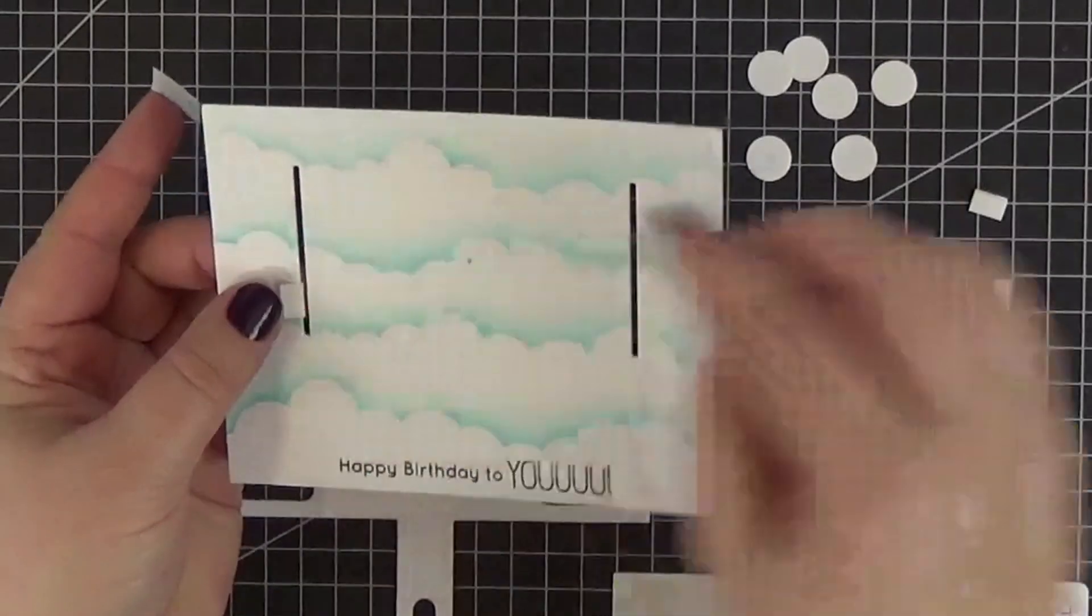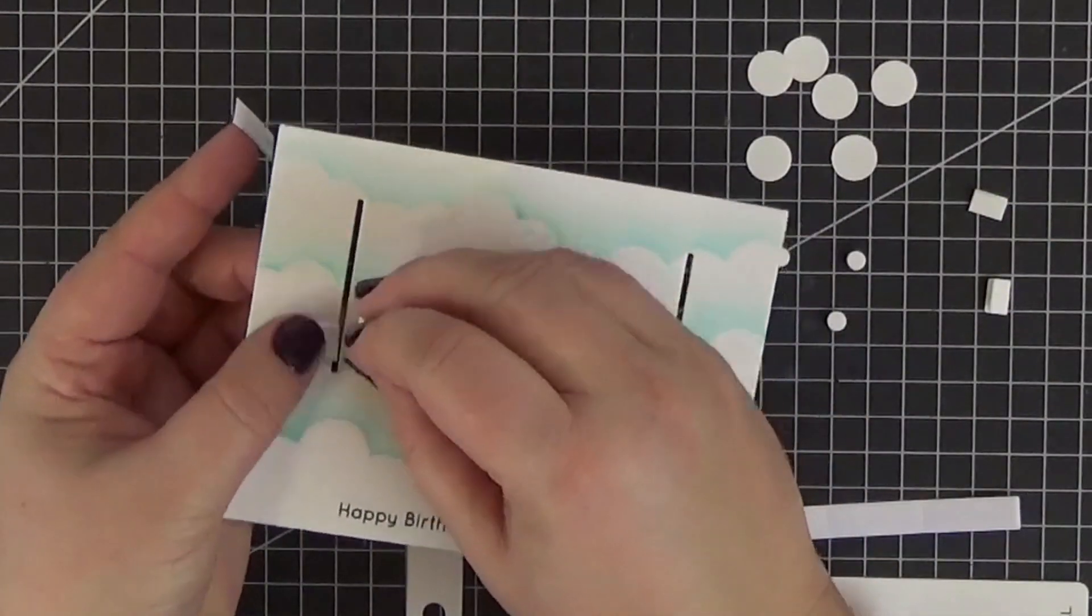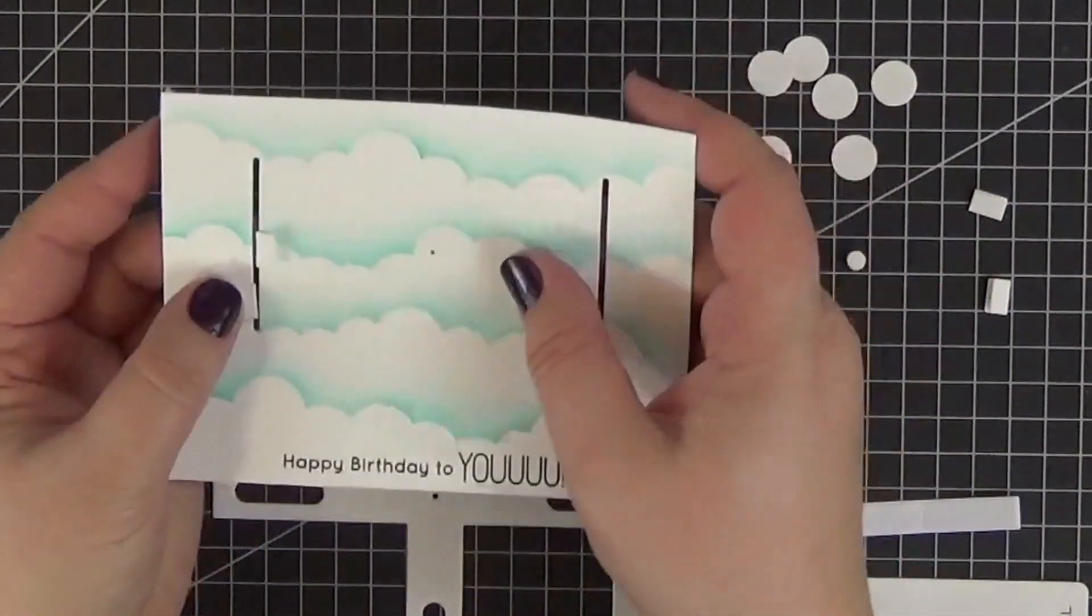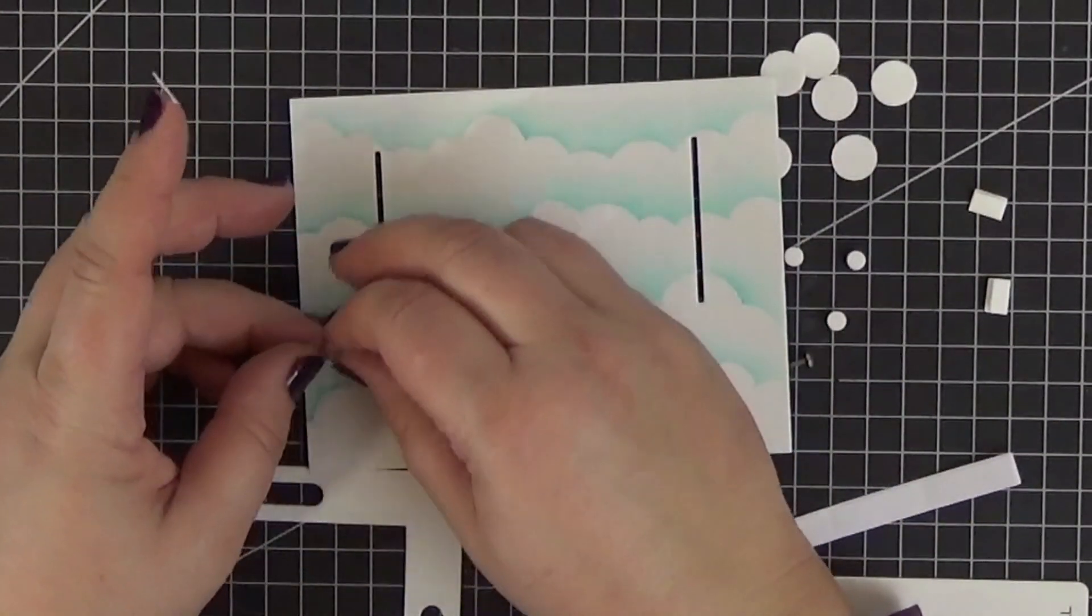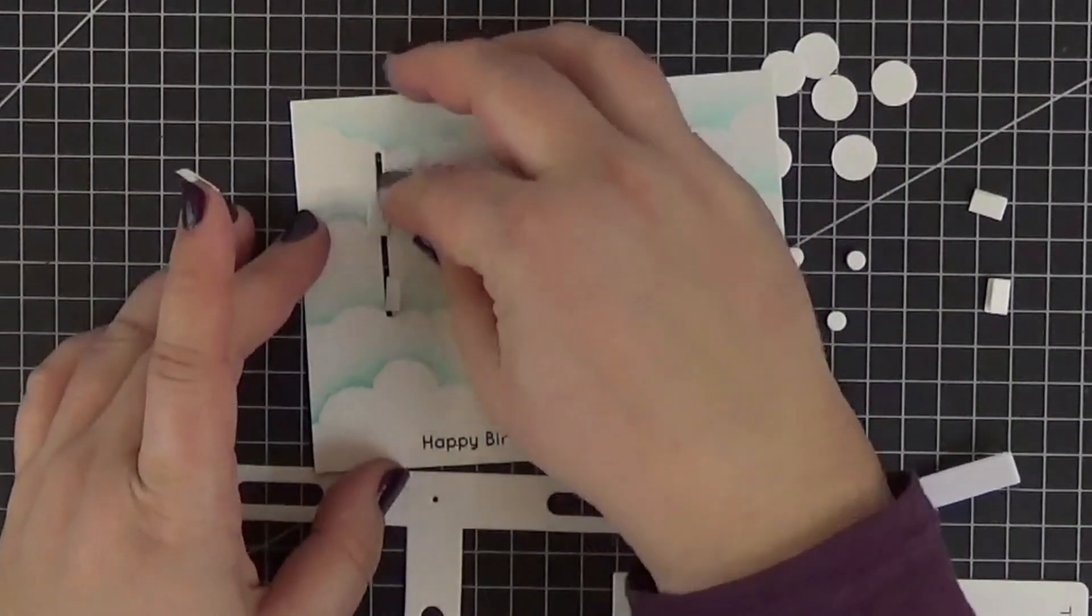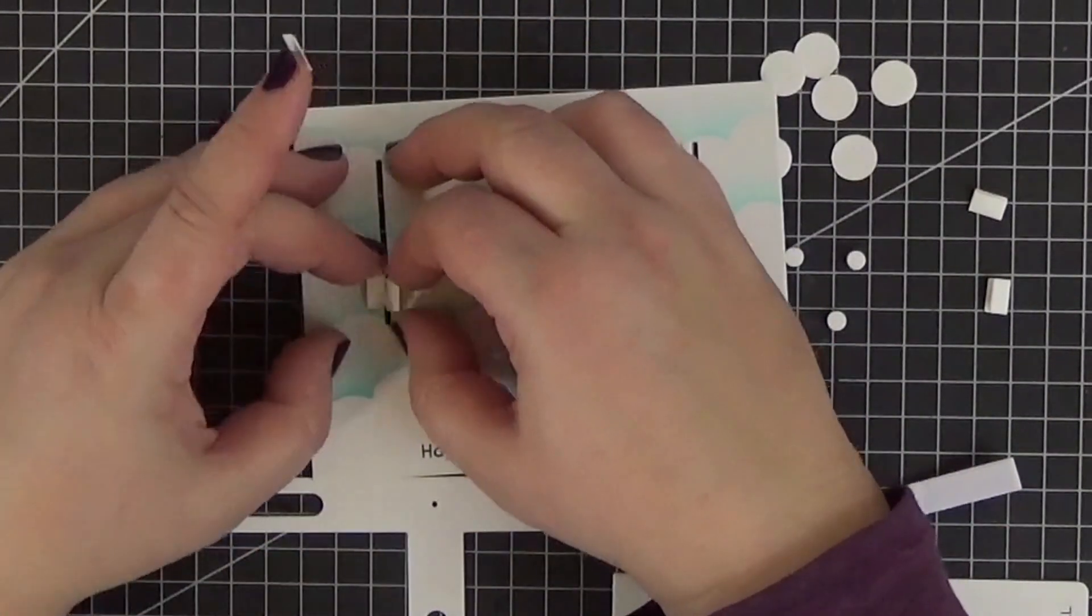Now on to the trickiest part of this card, especially if you have big fat fingers like I do. We need to insert two of the folded pieces in the slit and adhere them together with a piece of double-sided tape.